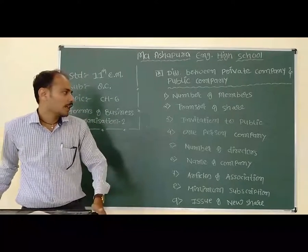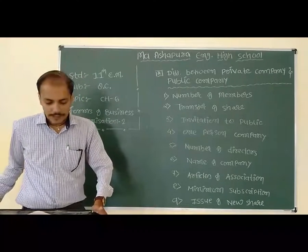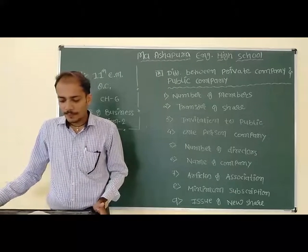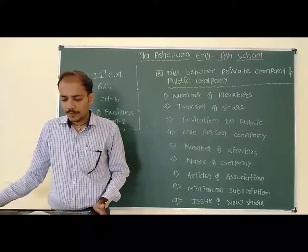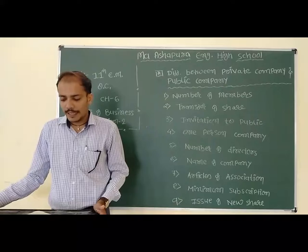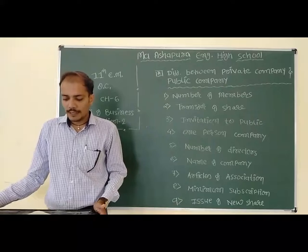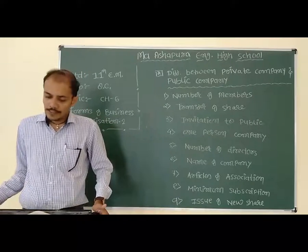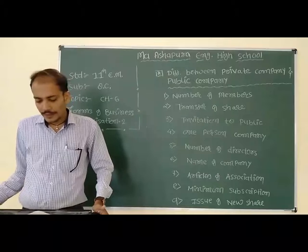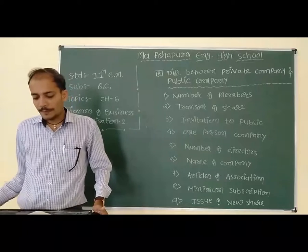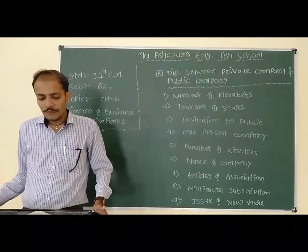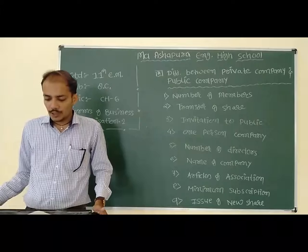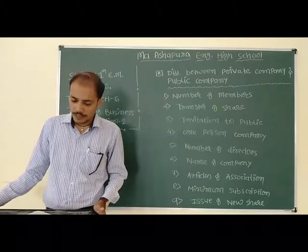Point number 4: one person company. Private company can be a one person company — one person company can enter into contract with only one member who is a director. Public company mein diya hai: public company cannot be a one person company and cannot do such a contract.